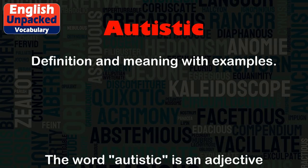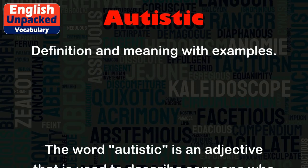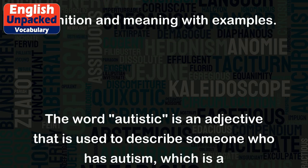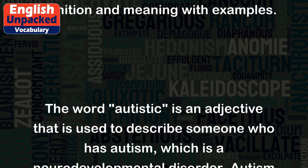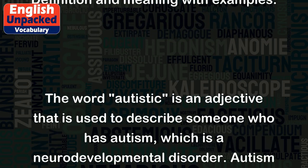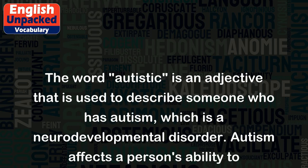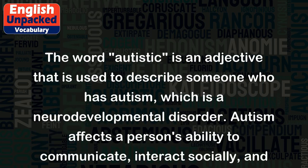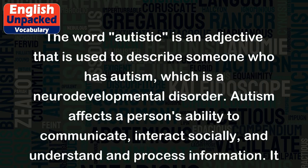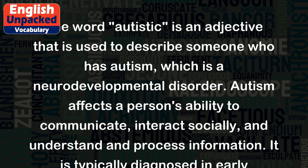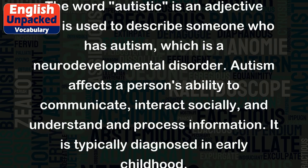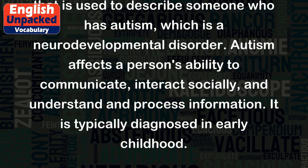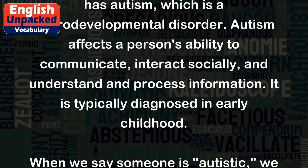The word 'autistic' is an adjective that is used to describe someone who has autism, which is a neurodevelopmental disorder. Autism affects a person's ability to communicate, interact socially, and understand and process information.